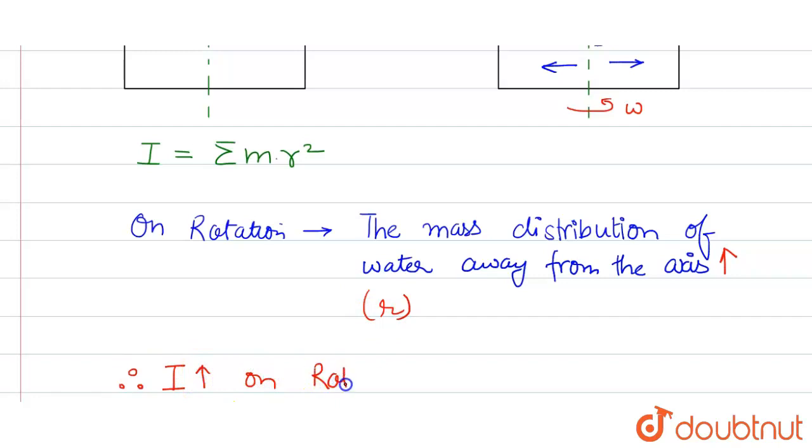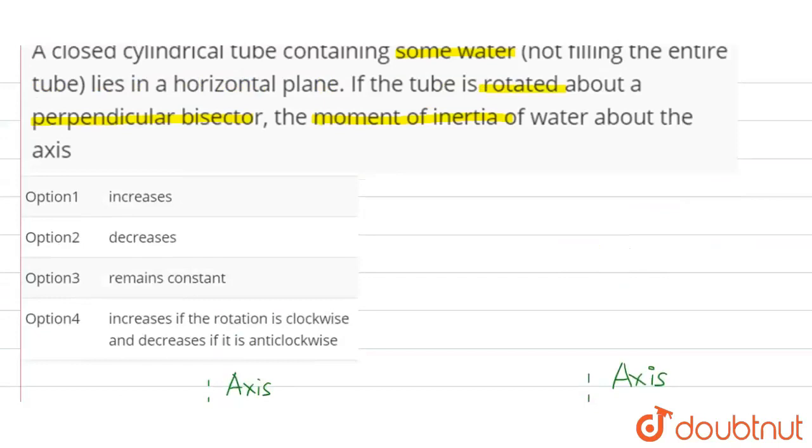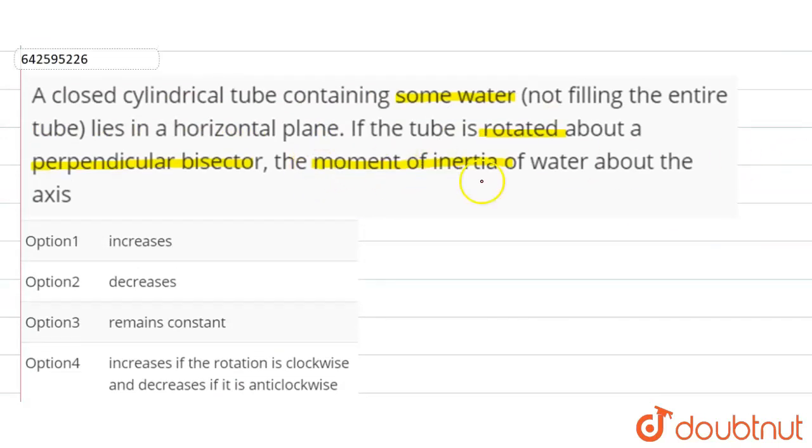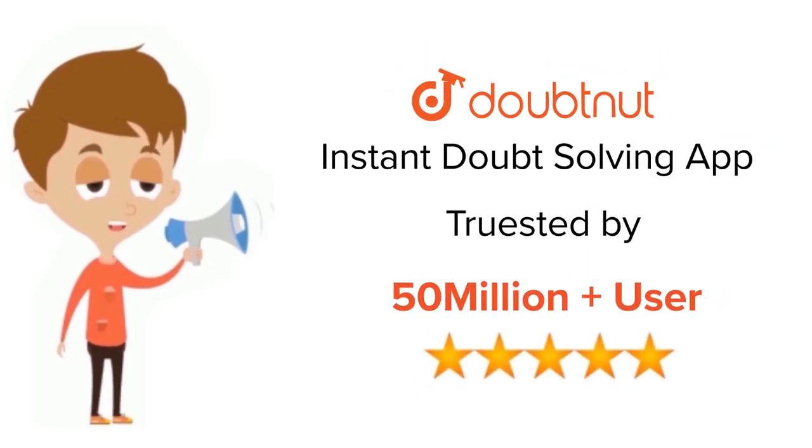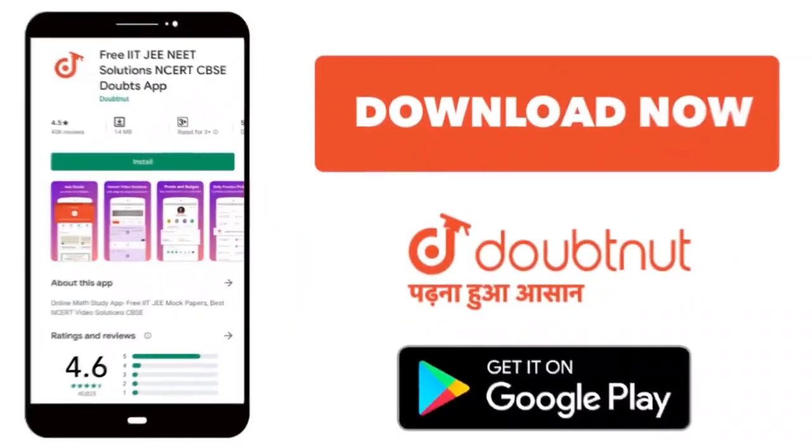Now from our options, the moment of inertia of water about the axis, option one is increases. Option one is correct. Thank you. For class 6 to 12, IIT-JEE and NEET level, trusted by more than 5 crore students, download Doubtnut app today.